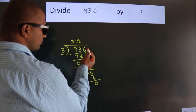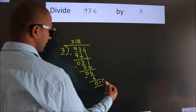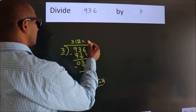After this, no more numbers to bring it down. So we stop here. This is our remainder. This is our quotient.